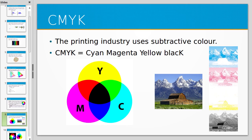You can see how an image divides up into different colour channels. For example, where you have green grass at the bottom of the image, that is represented by yellow and cyan, but there's almost no representation in the magenta channel.